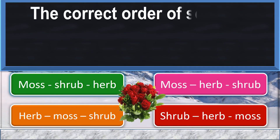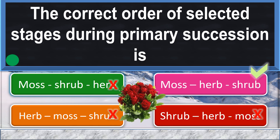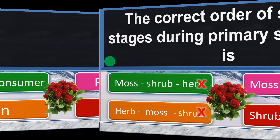The correct order of selected stages during primary succession is: Mosses, Herbs, and Shrubs.